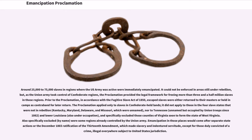The proclamation applied only to slaves in Confederate-held lands. It did not apply to those in the four slave states not in rebellion — Kentucky, Maryland, Delaware, and Missouri — which were unnamed, nor to Tennessee, unnamed but occupied by Union troops since 1862, and lower Louisiana, also under occupation, and specifically excluded those counties of Virginia soon to form the state of West Virginia.